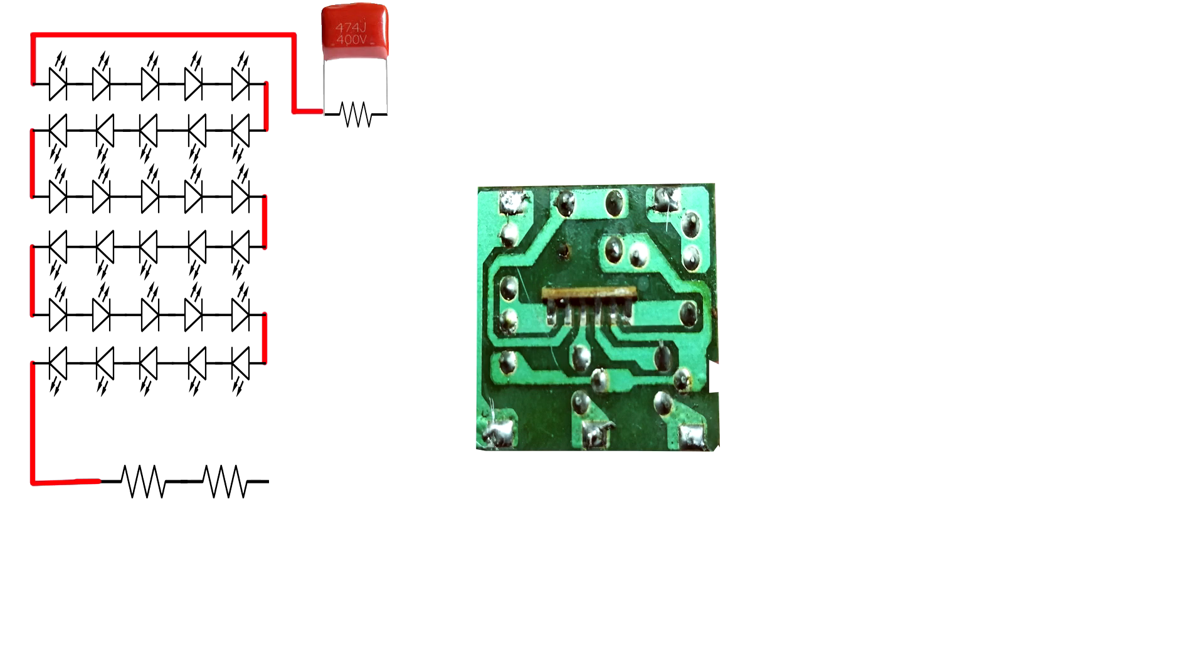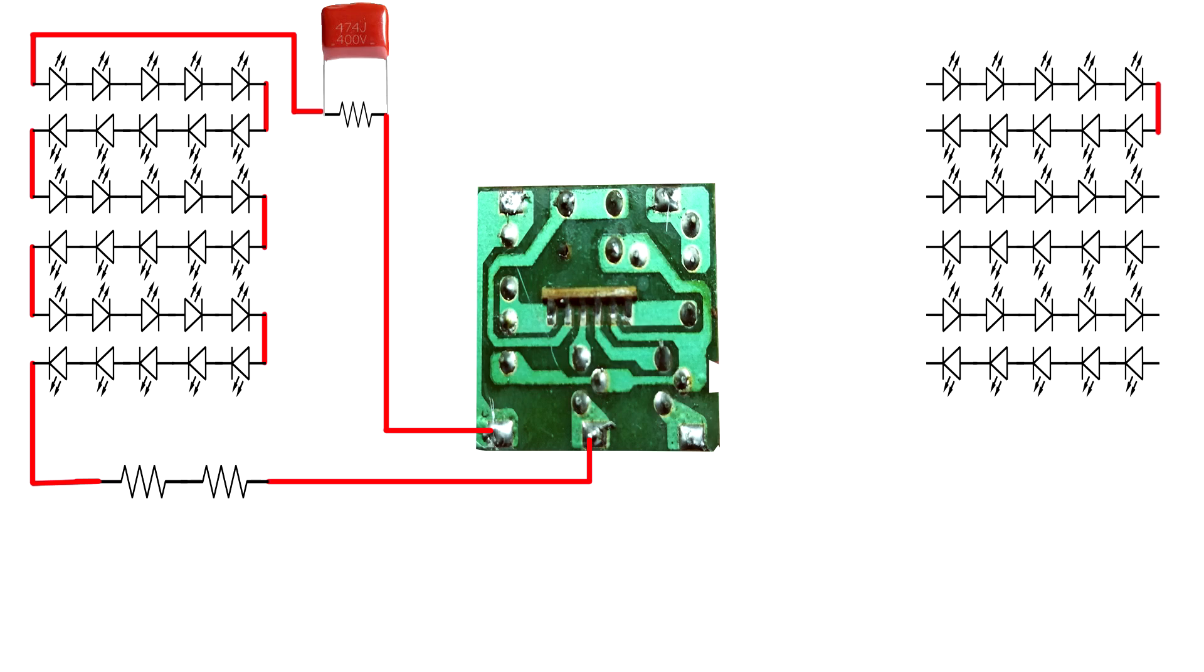Connect the first LED positive pin to the capacitor first pin. Connect the capacitor's other pin to ground. Connect the last LED resistor to channel 1. Now connect the 5mm blue LEDs in a series circuit.